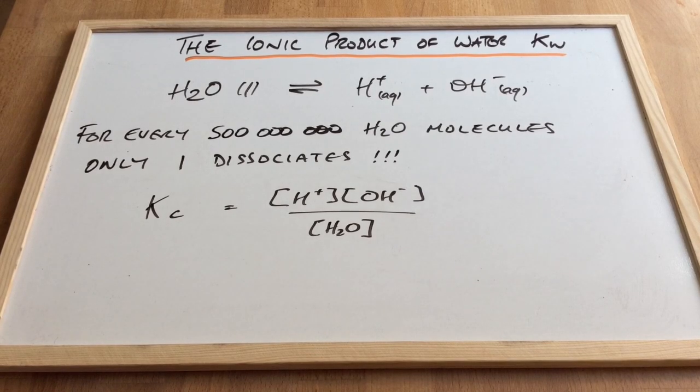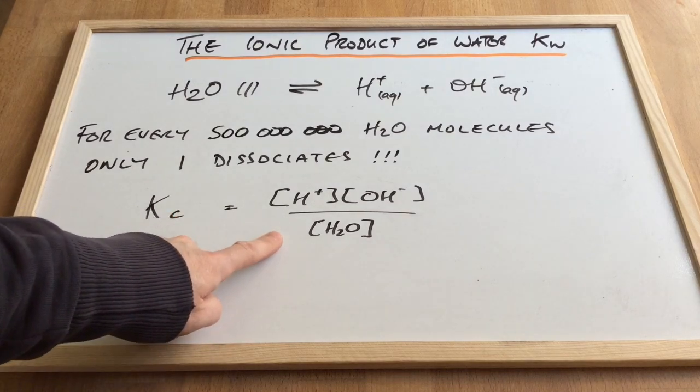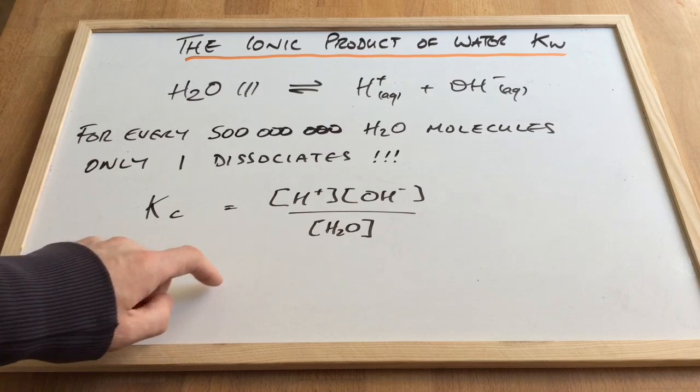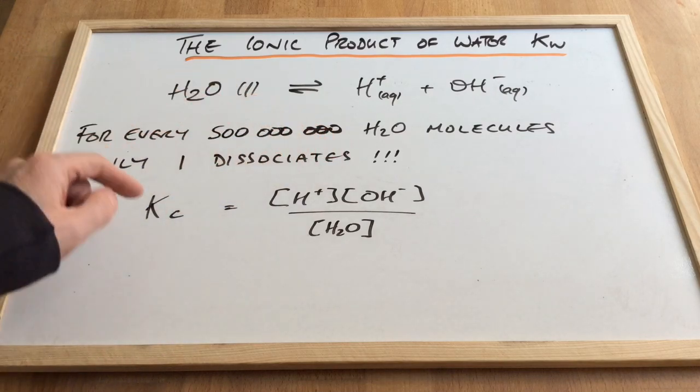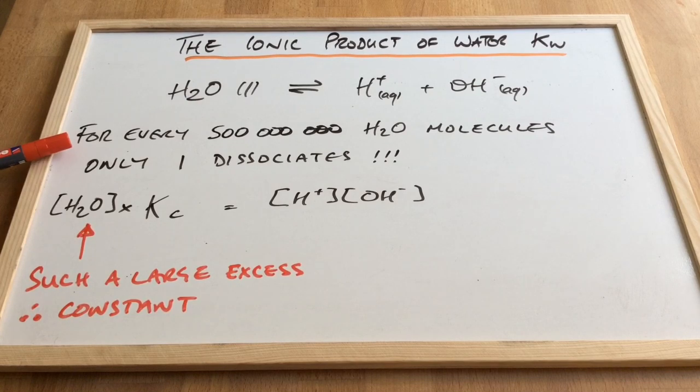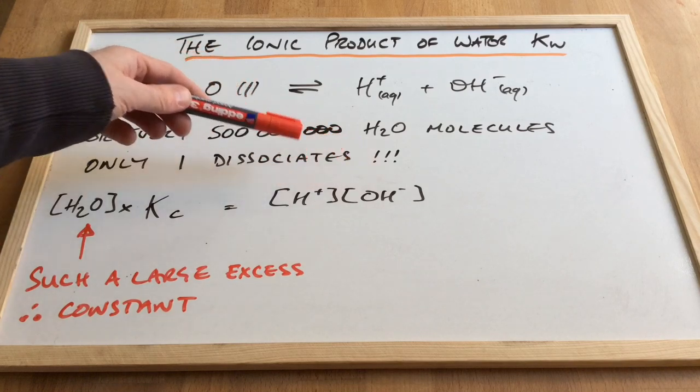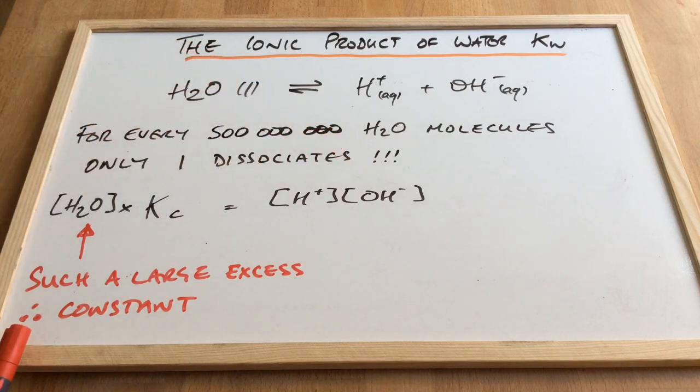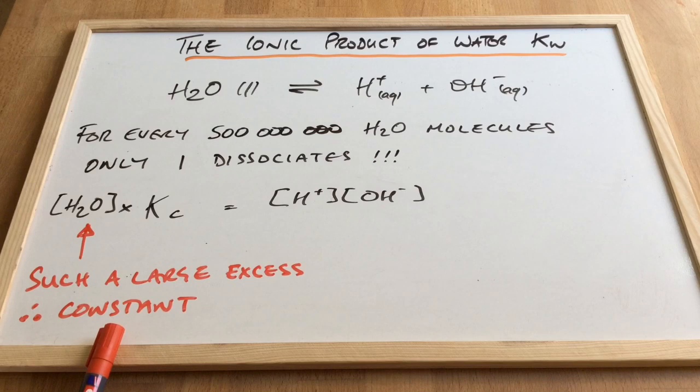Because it's an equilibrium, we can write an expression for the equilibrium constant for this process. And I'm sure you'll all agree that that's going to be it there. So it's the concentrations at equilibrium of the products over the reactant. Slight rearrangement would give us that. And if we think back to this point here, for every 500 million, only one dissociates. We can safely say that the concentration of water is huge in comparison to these two. And so we're going to treat the concentration of water as effectively being constant.